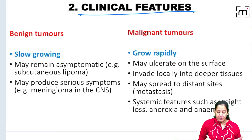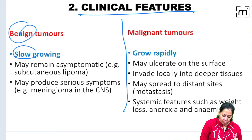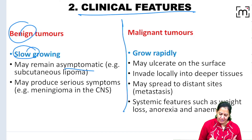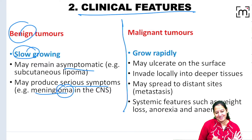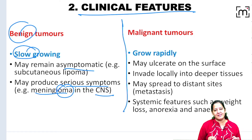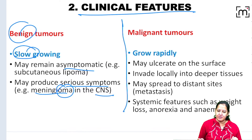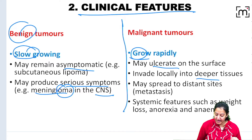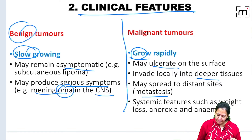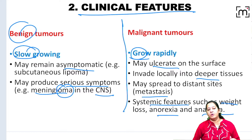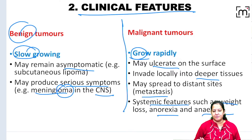Based on clinical features, benign tumours are usually slow growing and remain asymptomatic, but sometimes they may produce serious symptoms. For example, meningioma is a benign tumour of the CNS, but it can produce seizures. Malignant tumours are fast growing — they may ulcerate on the surface, invade deeper tissues, cause metastasis, and produce systemic features like weight loss, anorexia, and anaemia.